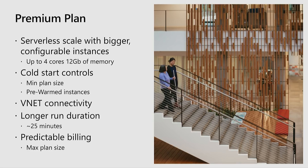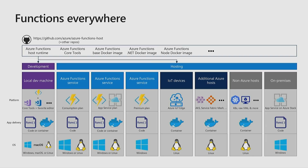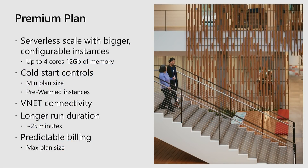At Build, we're taking the wraps off of our newest hosting plan: the premium plan. This is meant to fill scenarios that the app service plan offered in a serverless consumption mode. The premium plan offers serverless scale with bigger configurable instances — moving off A-series VMs to D-series VMs. You can choose from a one-core 3.5 GB RAM machine up to a four-core 12 GB machine. We're also giving you controls for cold start, enhanced VNet connectivity, longer run duration (about 25 minutes per execution in public preview), and predictable billing with max scale-out controls.